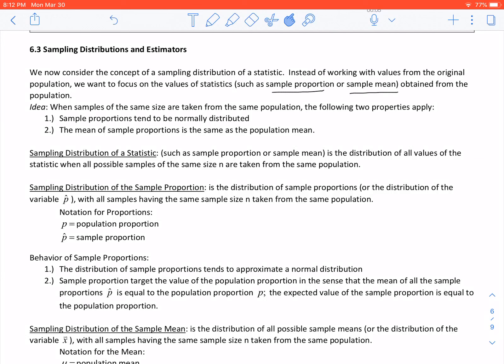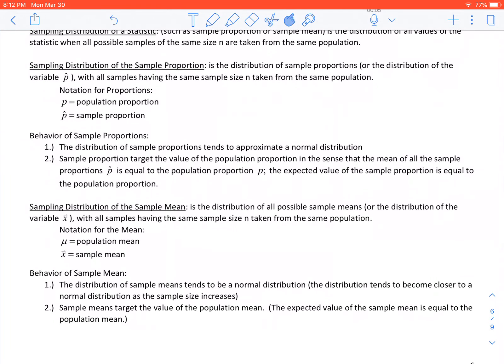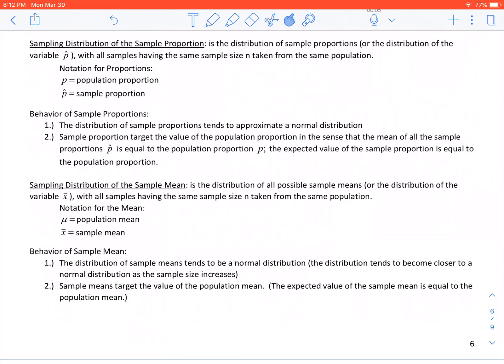When samples of the same size are taken from the same population, the following two properties apply. Sample proportions tend to be normally distributed, and the mean of sampling proportions is the same as the population mean. There's not much in this section, just a couple things along the lines of notation. The sampling distribution of a sample proportion is the distribution with all samples having the same sample size taken from the same population. The notation you need to know: p is the population proportion and p-hat is the sample proportion.